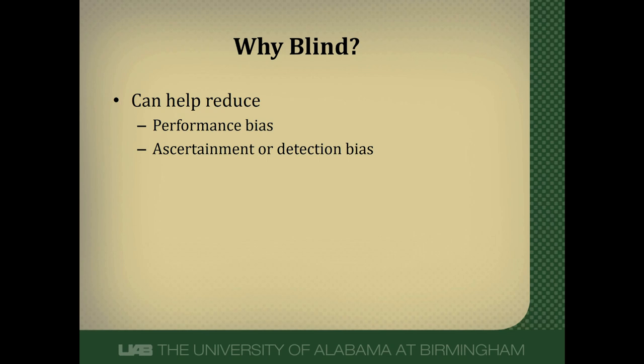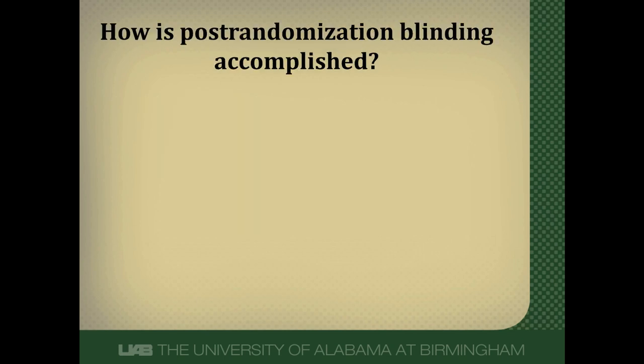Ascertainment or detection bias refers to systematic differences in how outcomes are determined. Researchers may look harder or look differently in one group versus another — outside the protocol — only because they know what group somebody is in. That's why blinding is so important.